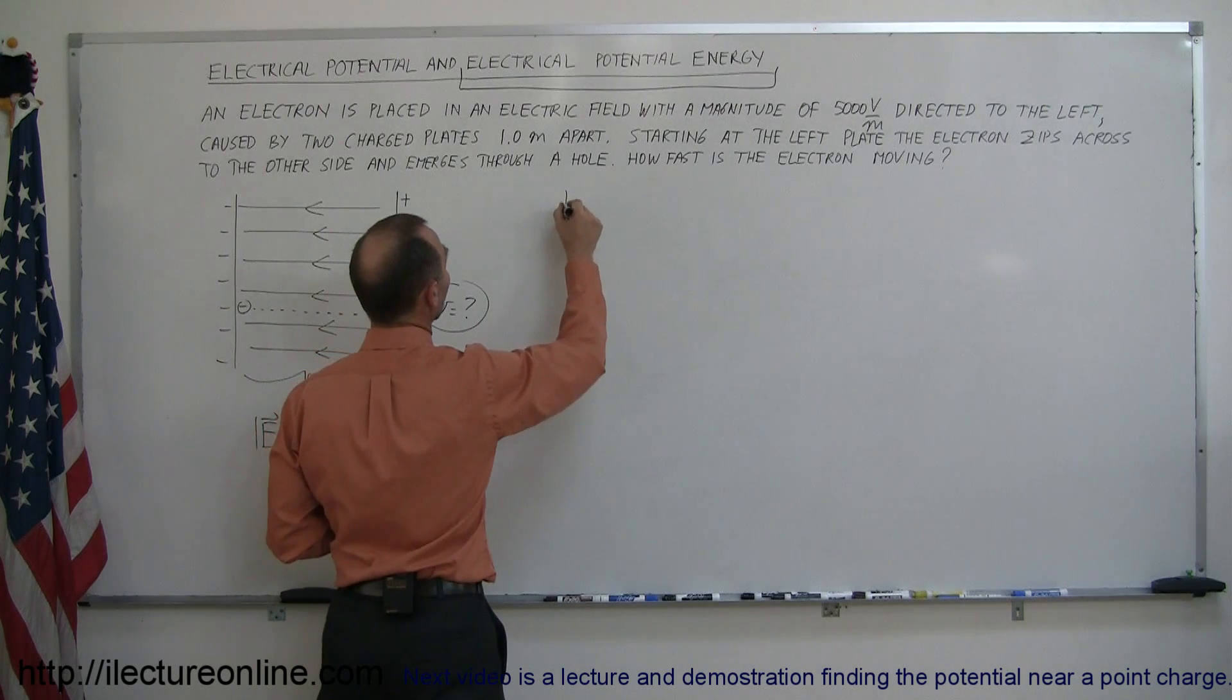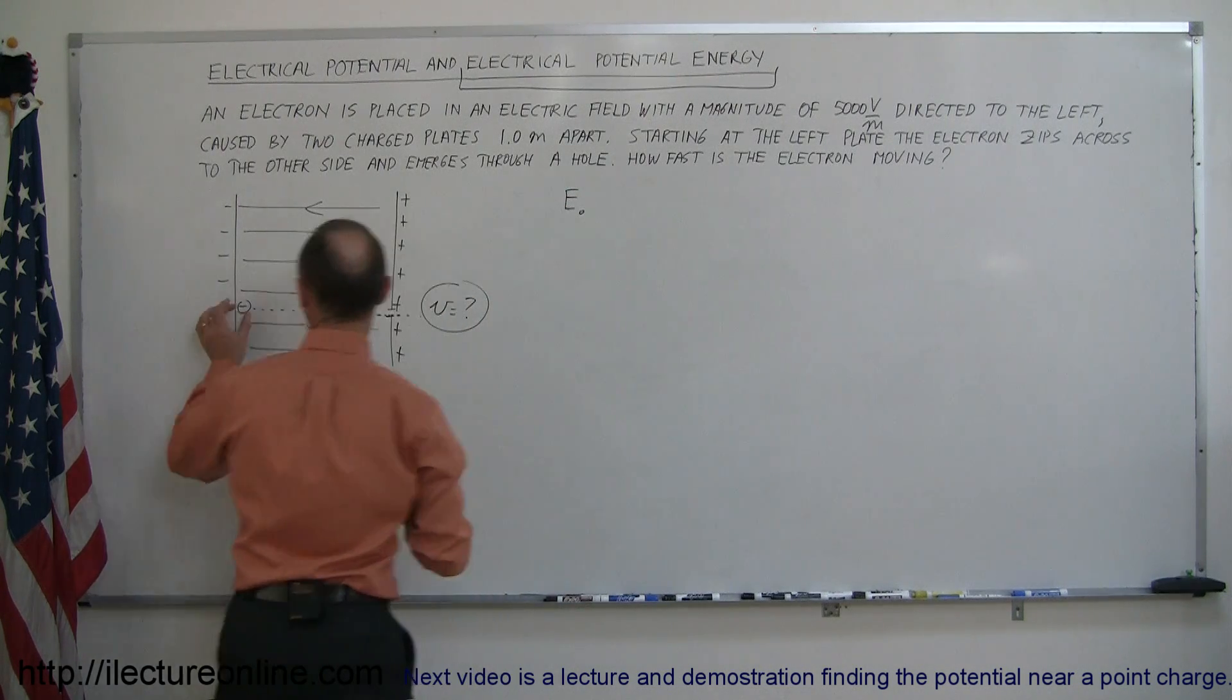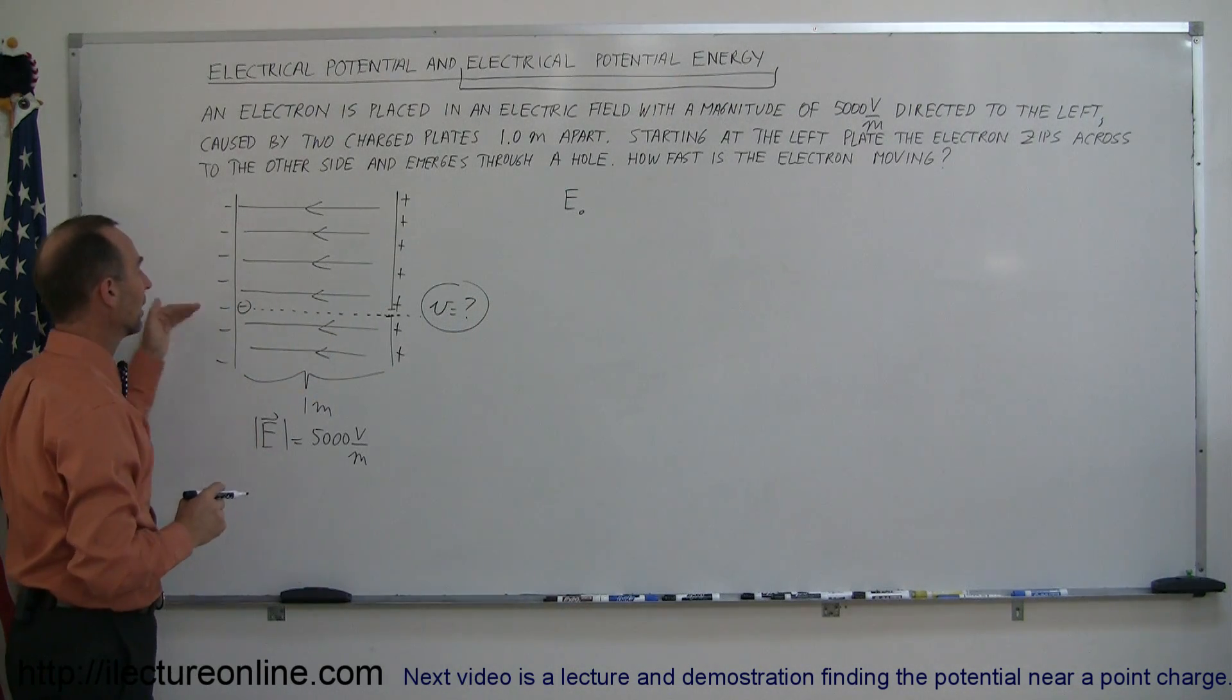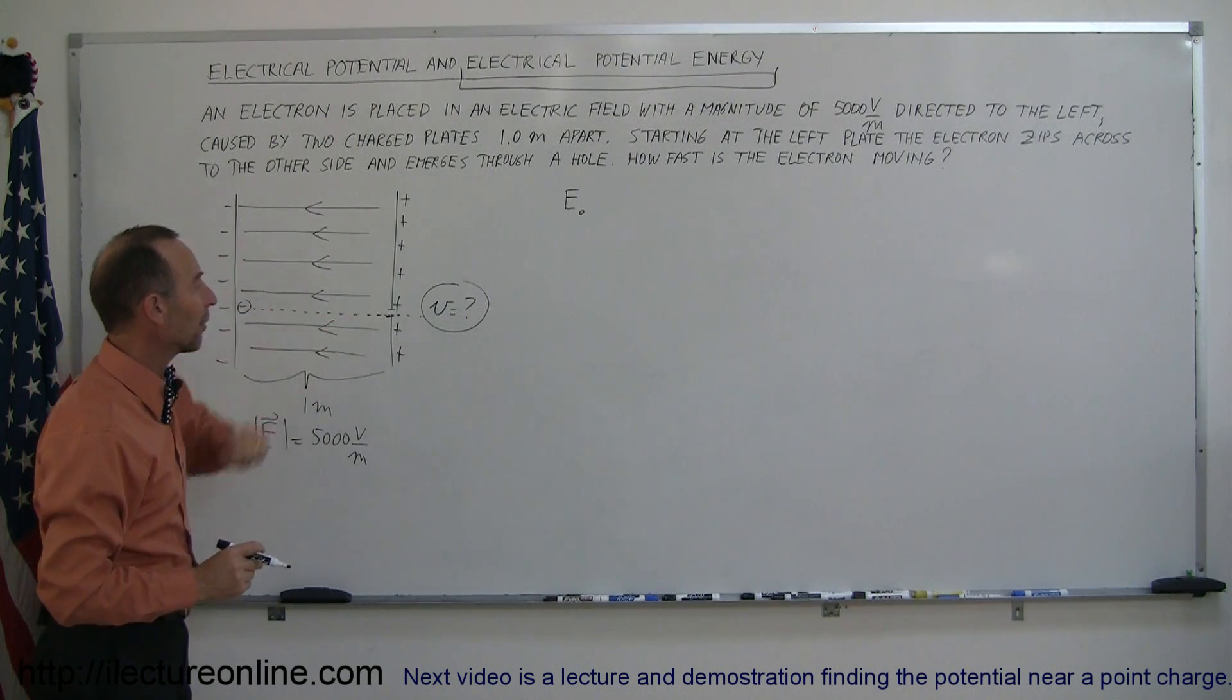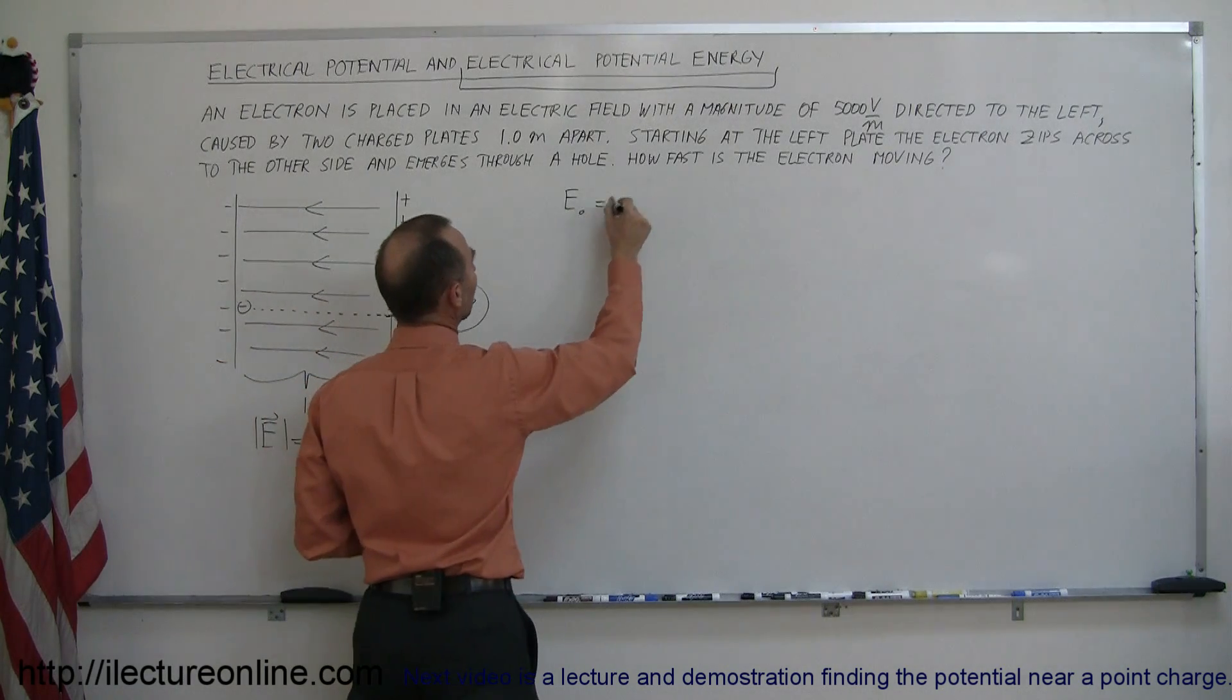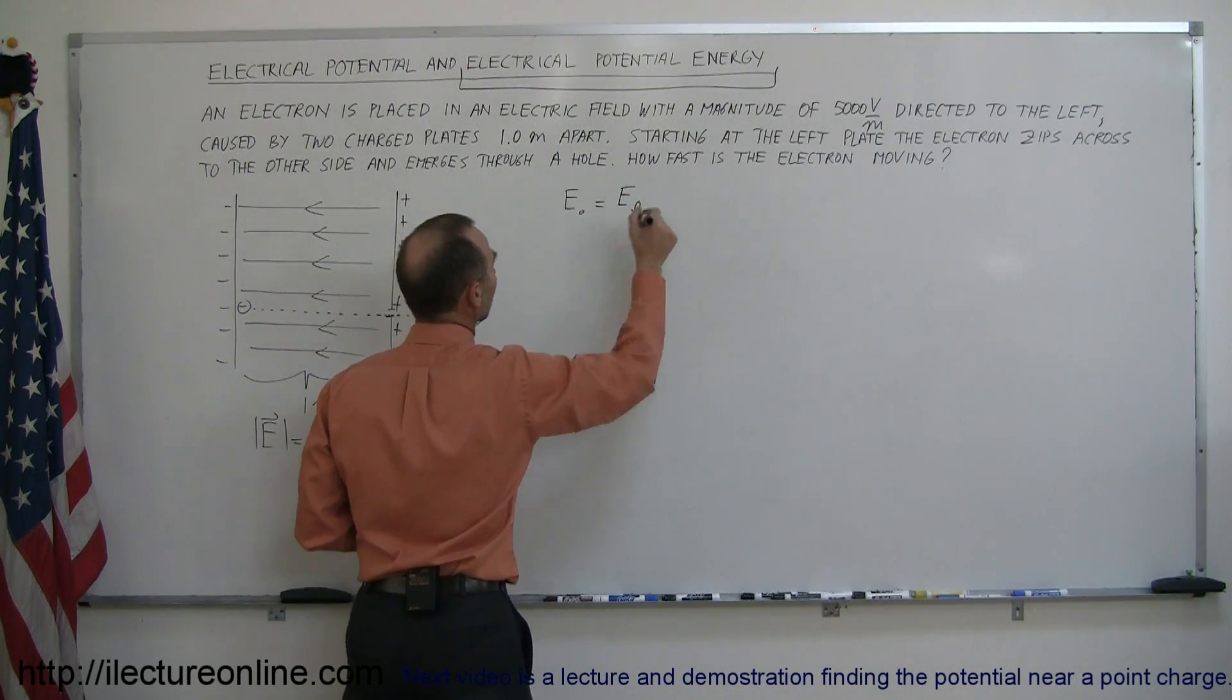So you could say that we have energy initial at this place of the electron and then when the electron zips through the other side it no longer has any potential energy but it now has kinetic energy so that should equal the final energy when it emerges through the hole.